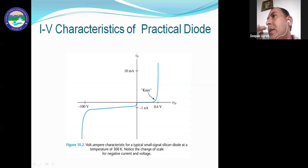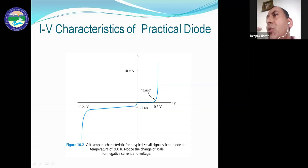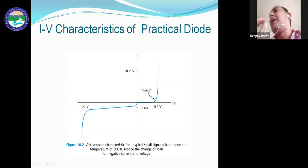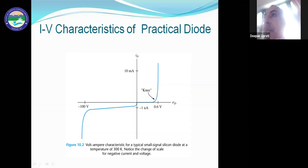After a certain reverse voltage, the current suddenly increases. This is because a minority charge carrier gains sufficient energy to break the covalent bond, creating more charge carriers. This breakdown effect causes a sudden rise in reverse current beyond a critical voltage.